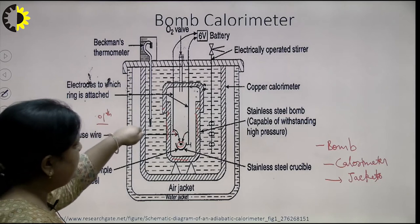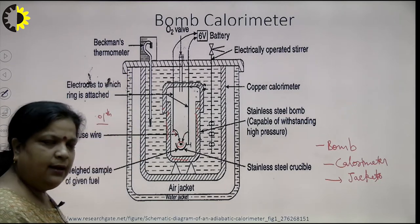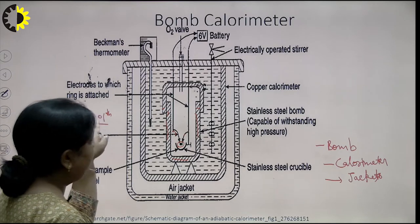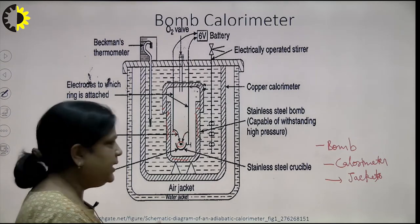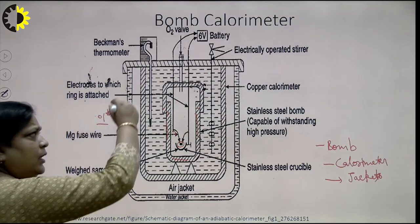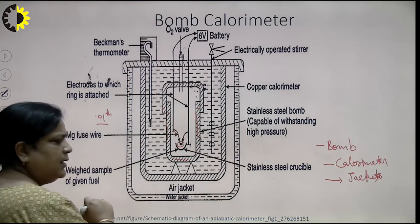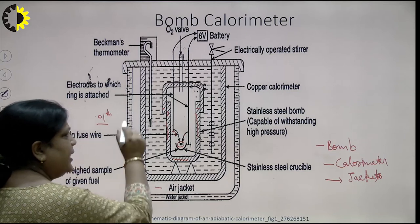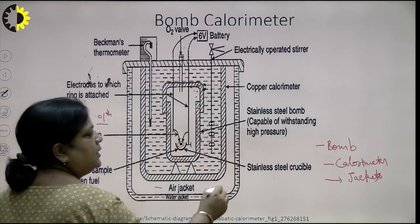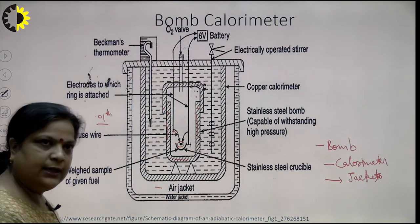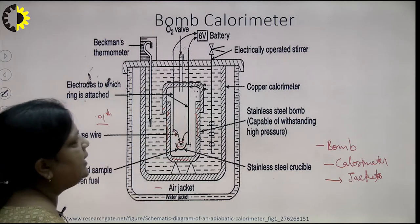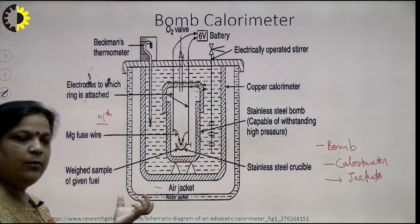A normal thermometer can find only up to 0.1 degree, so for more accuracy we use a Beckman thermometer. The whole bomb cylinder is kept in a copper calorimeter container which has a known amount of water. At one side there is a Beckman thermometer, and on the other side there is an electrically operated stirrer. The stirrer is used to maintain constant temperature distribution. The whole assembly is then covered with an air jacket as well as a water jacket to avoid loss of heat after combustion.